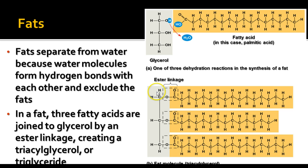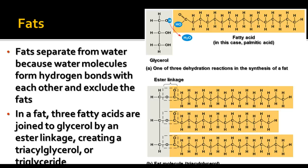The linkage between the glycerol and the fatty acid is called an ester linkage, where a carbonyl group is attached to a carbon that is also attached to another oxygen. This produces what is called a triglyceride, sometimes called triacylglycerol. You've probably heard of triglycerides — if you've had a lipid panel done on your blood, they'll list the percentage of triglycerides in your bloodstream.